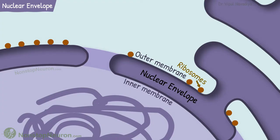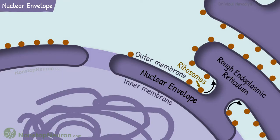The outer membrane contains ribosomes and this membrane is continuous with the membrane of rough endoplasmic reticulum. The space in between the two membranes of the double layer is continuous with the lumen of the rough endoplasmic reticulum. The inner membrane is smooth.